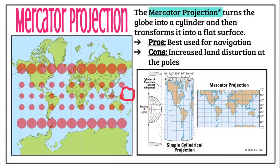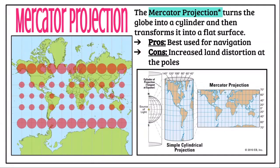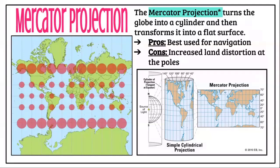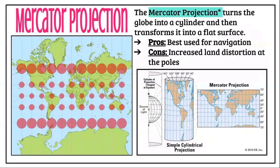When you flatten out that map and stretch it, it widens the countries at the poles. As truesize.com notes, the Mercator map exaggerates the size of countries near the poles like the US, Russia, and Europe, while downplaying the size near the equator. In reality, Greenland is 8.8 million square miles and Africa is 11.6 million square miles — nearly 14 and a half times larger. But on the Mercator projection, Greenland appears huge and even larger than Africa.